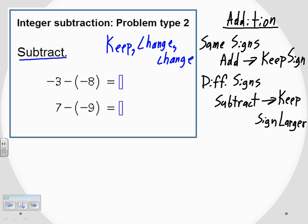So the first problem here, negative 3 minus a negative 8. If we apply keep, change, change to turn that into an addition problem, I'm going to keep the sign of the first number, negative 3. That doesn't change.